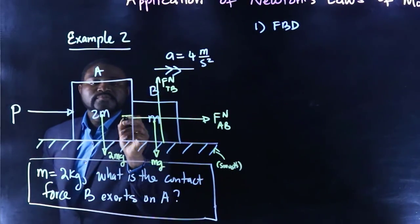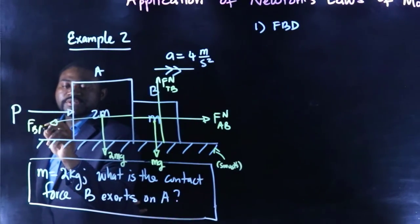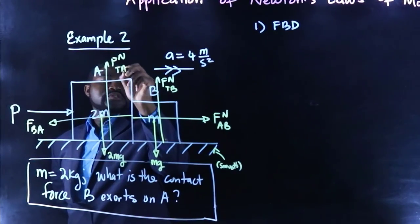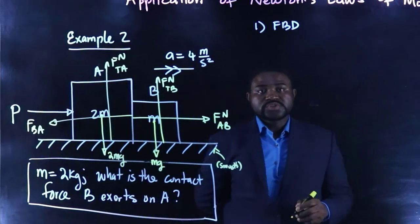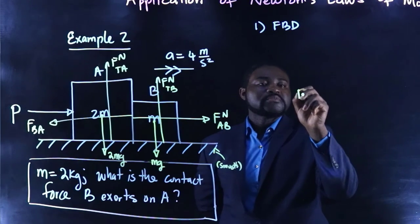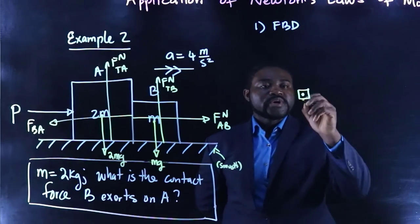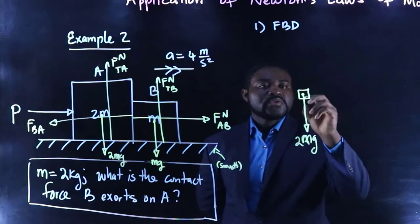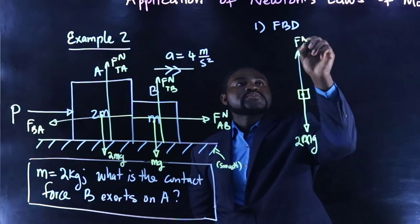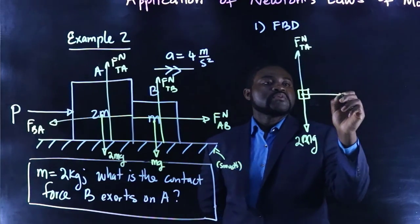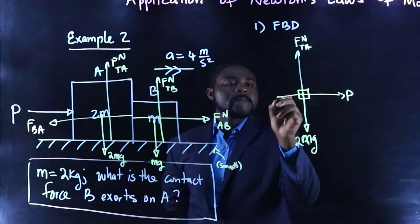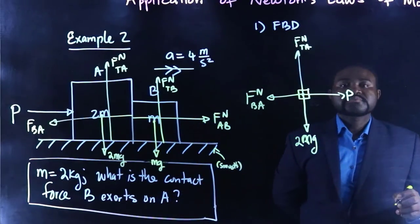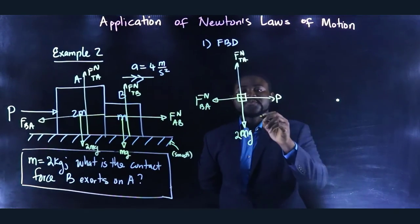So we have the force that B asserts on A. The force that the table asserts on A. So if you want to draw the free body diagram, let's start with object A. So we have the weight. We have the normal force that the table asserts on A. This is P. This is the normal force that B asserts on A. This is the free body diagram for A.